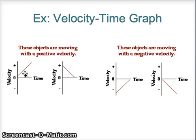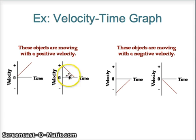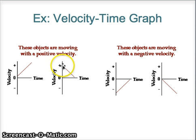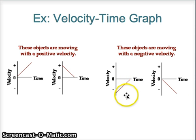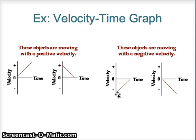The slope of a velocity-time graph represents acceleration — change in velocity over time is acceleration, which is the definition of acceleration. Now this car is still moving in the positive direction even though you have a negative slope. What that means is the car originally starts off with a pretty high speed but then slows down to zero. Negative velocity with positive acceleration means the car is moving slower and slower and eventually stopping.